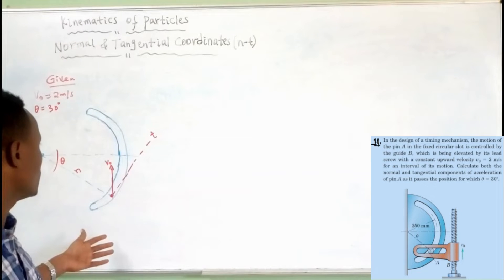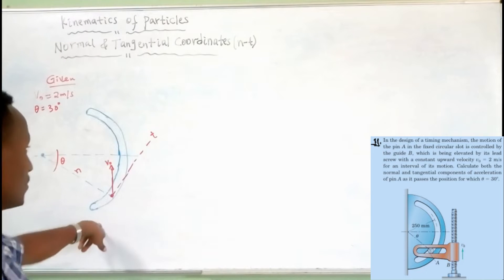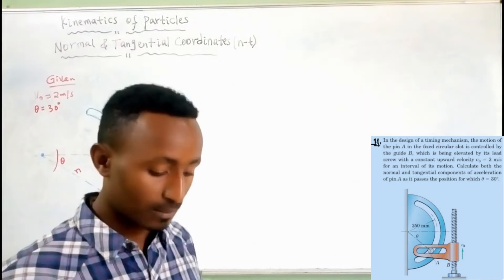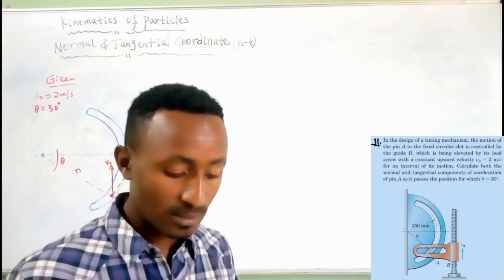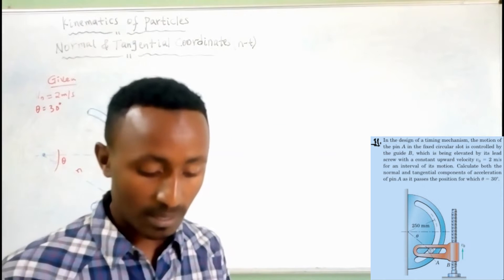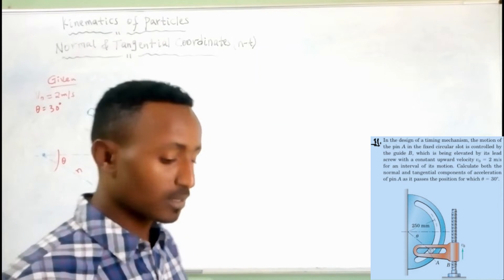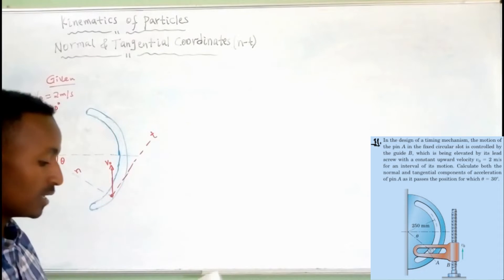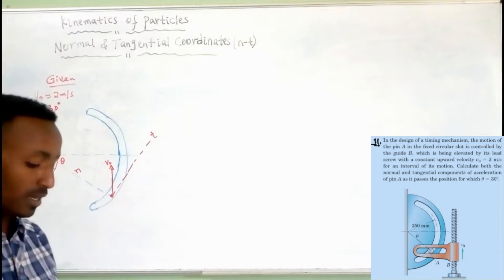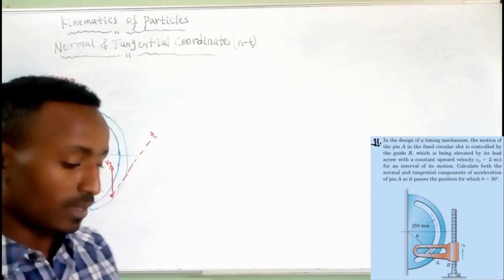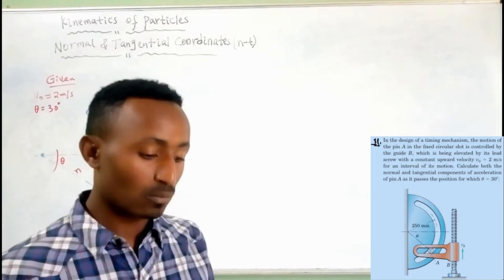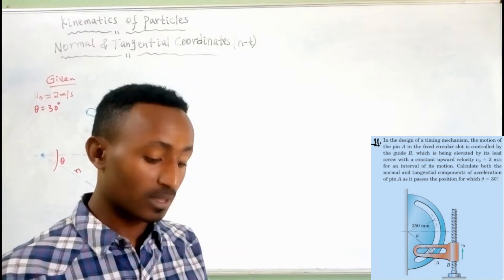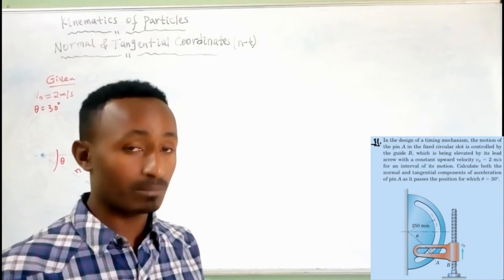This is the free body diagram. In the design of a timing mechanism, the motion of the pin in the fixed circular slit is controlled by the guiding pin.